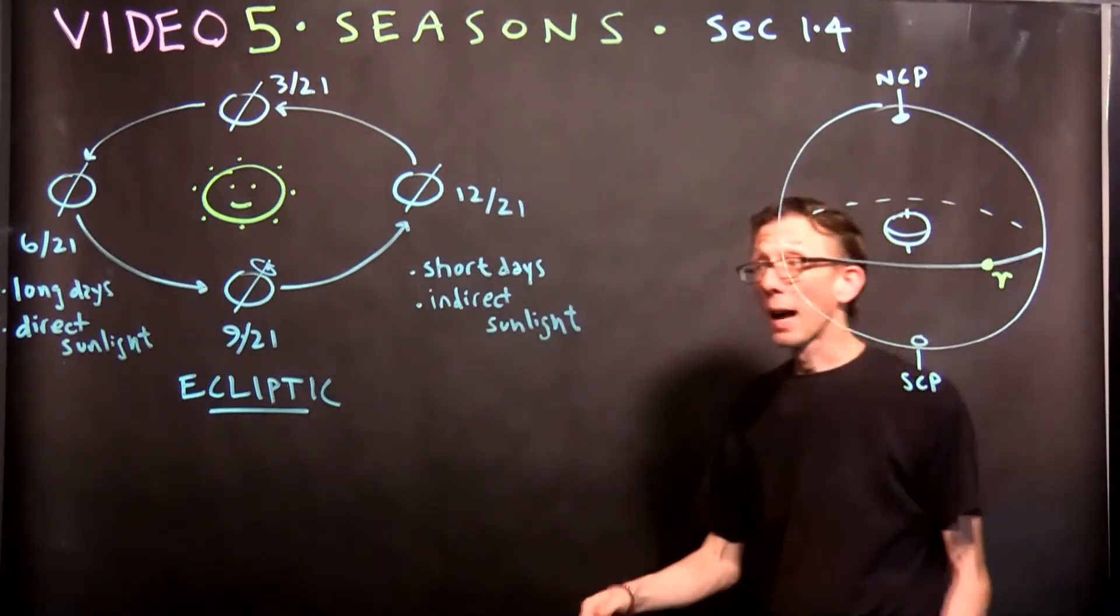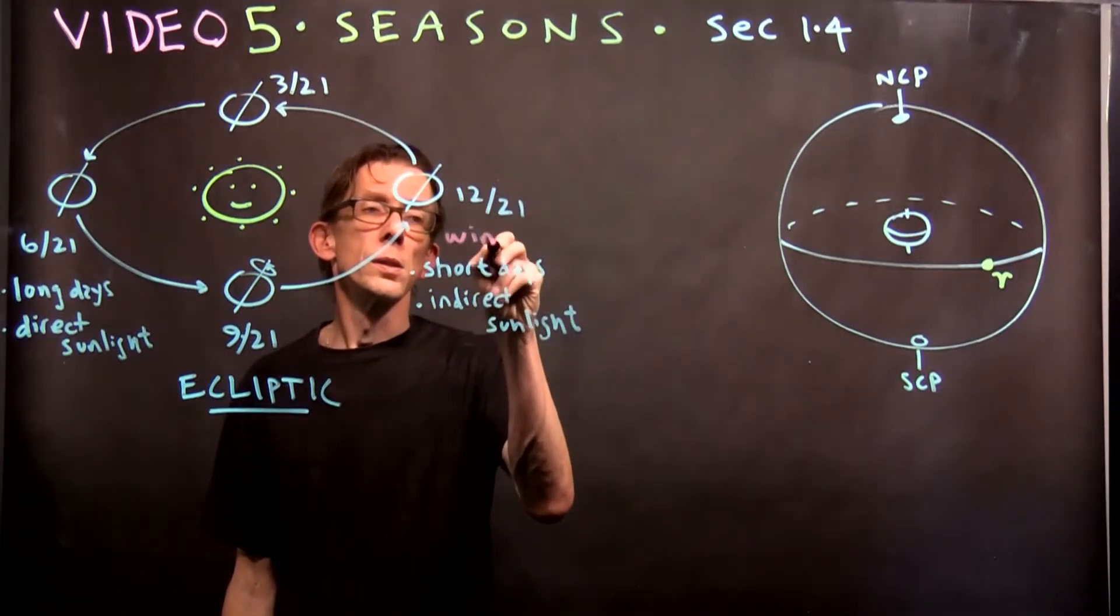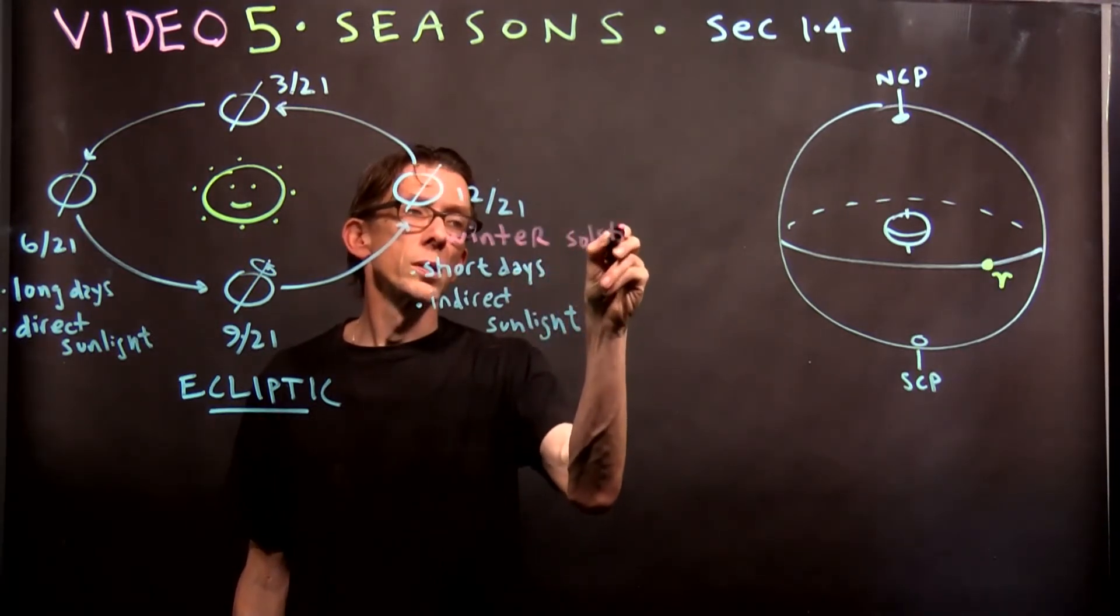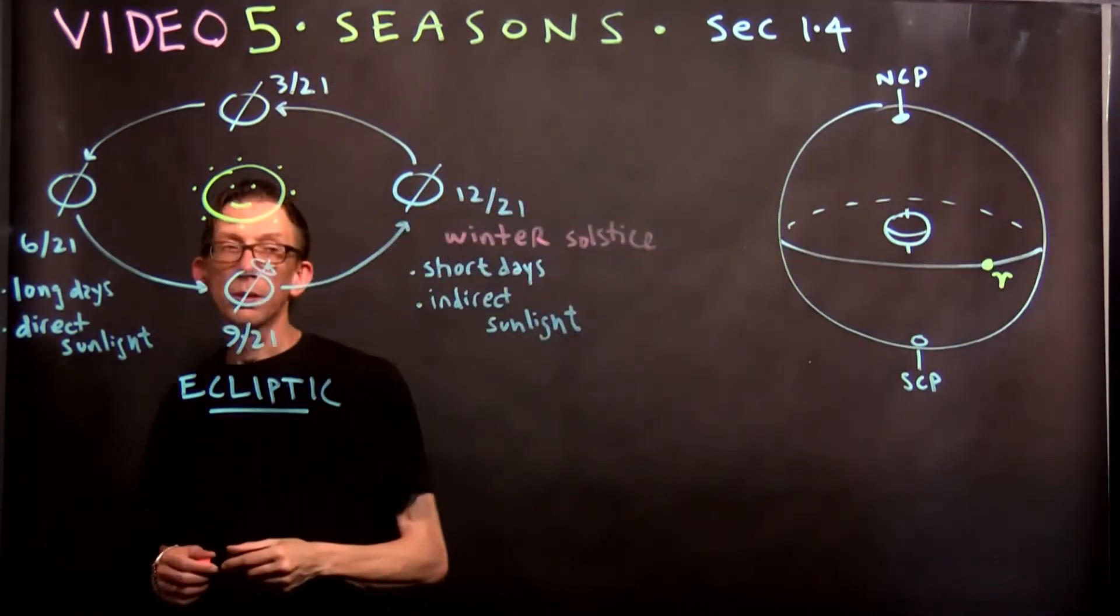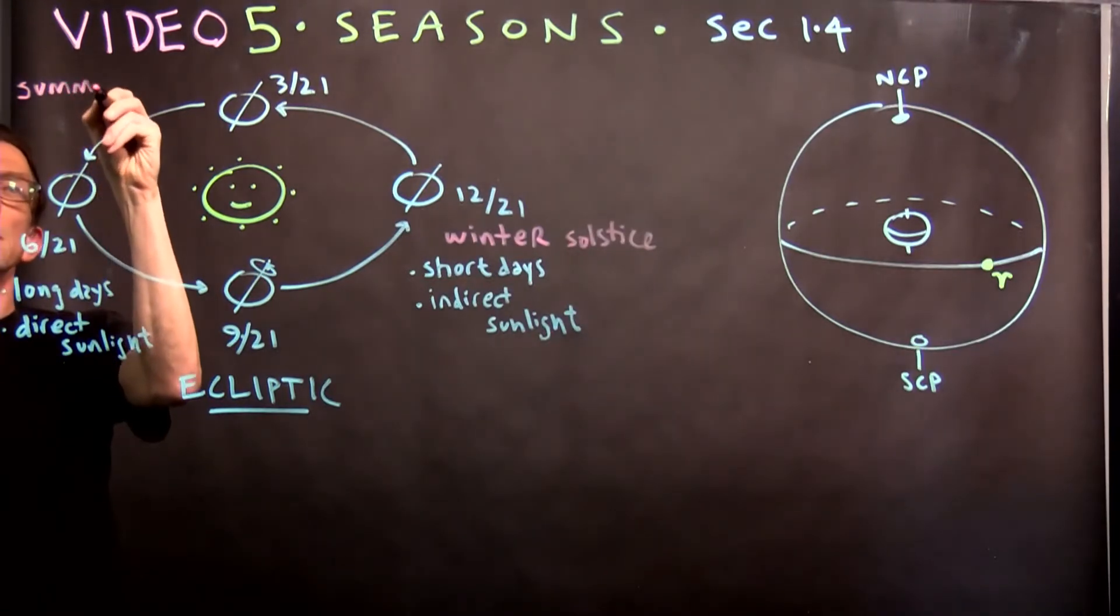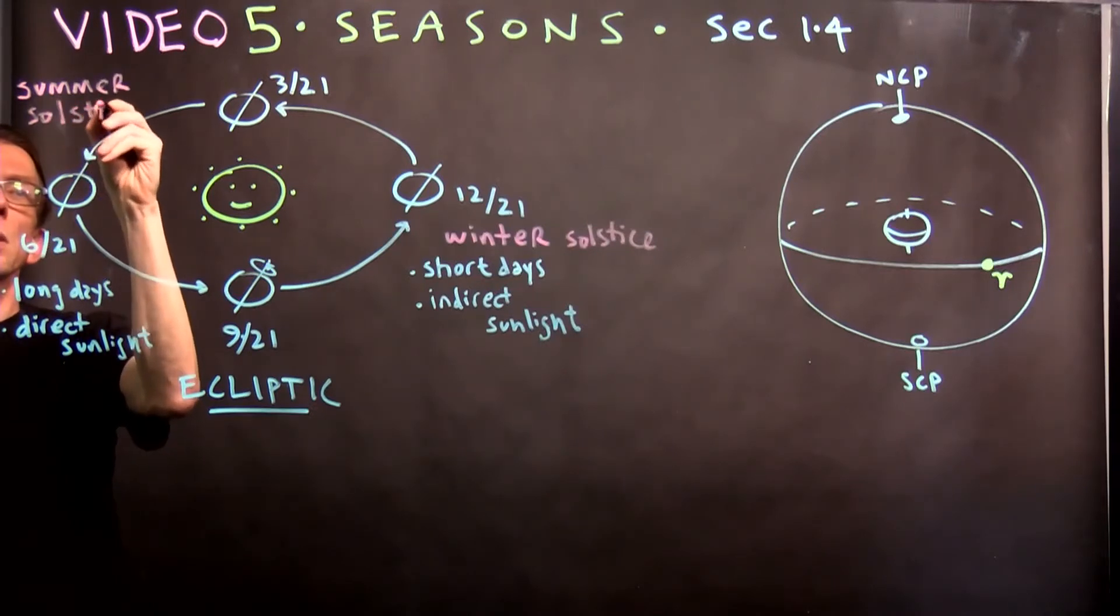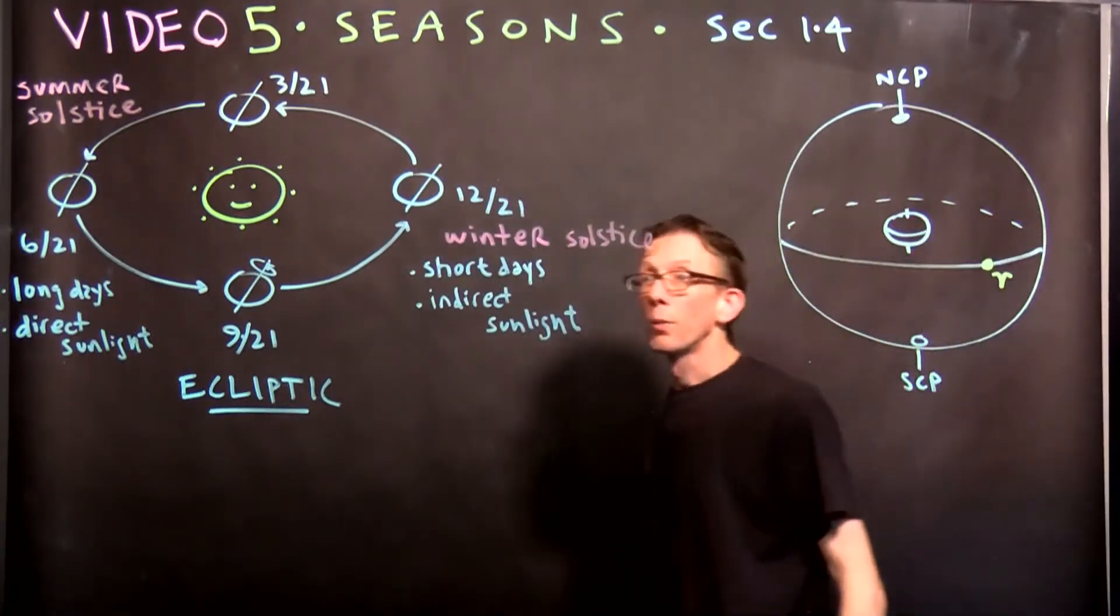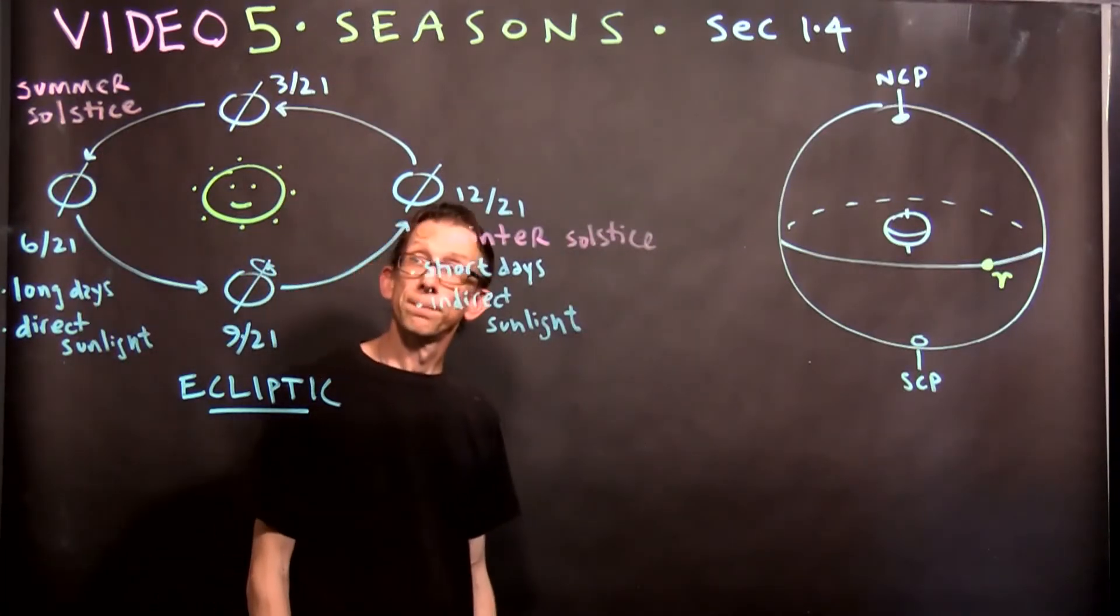And it's because of that tilt. The tilt of the north pole away from the sun in the winter means the sun stays low and that the sunlight is indirect. The tilt of the north pole toward the sun in the summer means we have long days and direct sunlight. Now these four points have names. 12/21 is known as the winter solstice. Over here on 6/21 is known as the summer solstice. So 12/21, the earth, we say, is at the winter solstice. And over here, the earth is at the summer solstice.